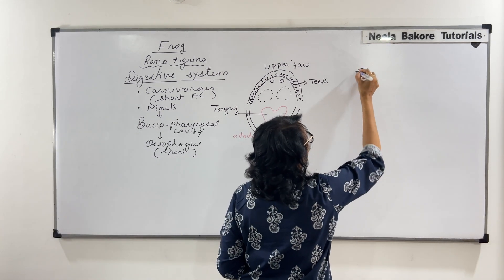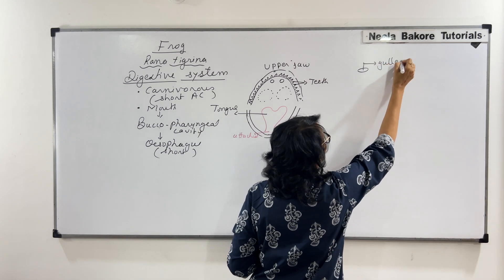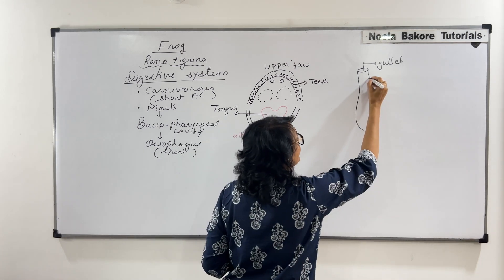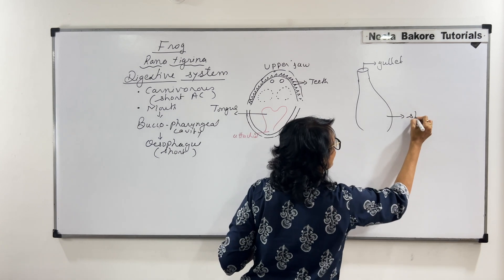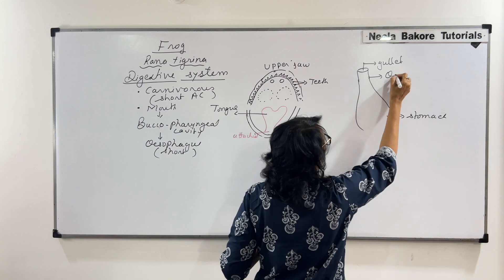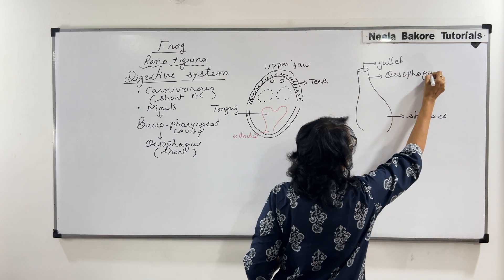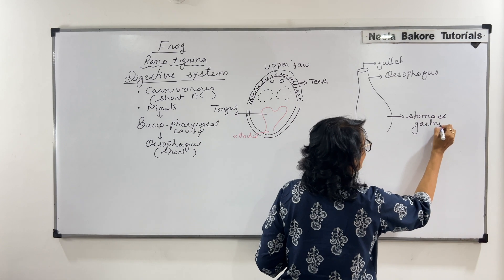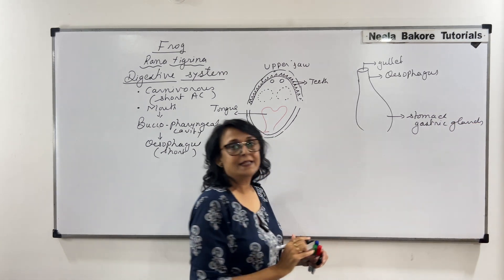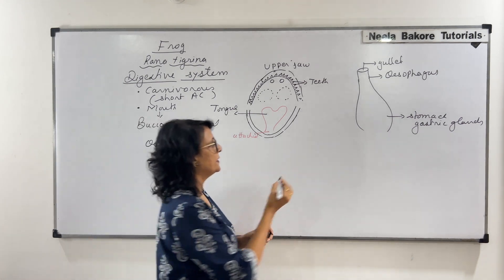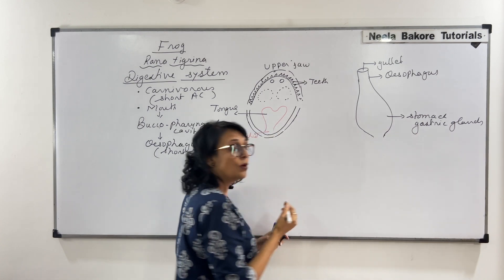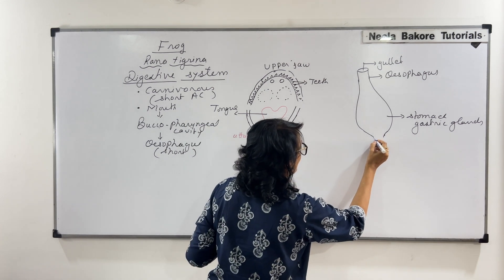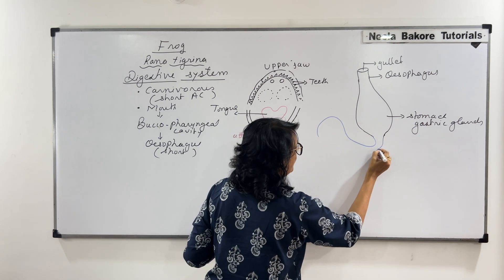The opening of the alimentary canal is known as the gullet. Then there is the narrow esophagus, and it leads into a big sac-like stomach. The stomach has all the gastric glands, and all the enzymes and hydrochloric acid are secreted here. The stomach leads into the intestine part, which is a tubular coiled structure.